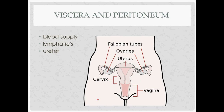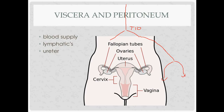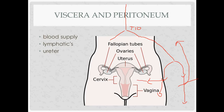For the blood supply, the abdominal aorta comes down and divides at L4 — the belly button level. It divides into the common iliacs, which further divide into external and internal branches. The external goes down to the leg, becoming the femoral artery after the inguinal ligament, and also gives off the inferior epigastrics. The internal iliac divides into anterior and posterior divisions. The anterior division gives off the uterine artery and vaginal branches — sometimes directly, sometimes off the uterine artery — supplying the uterus, cervix, and vagina.